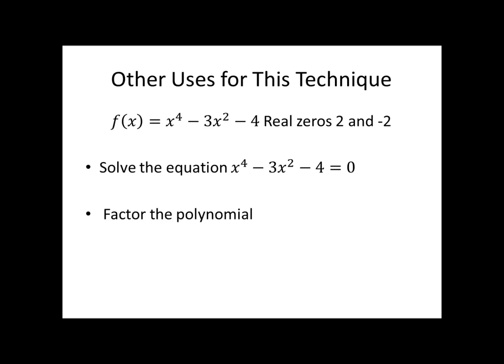Other uses for this technique: since we're finding where the function equals zero, we can solve the equation x⁴ - 3x² - 4 = 0 using the exact same process, finding real solutions x = 2 and x = -2. But here's the big thing — we can also use it to factor the polynomial. Two is a zero, so x - 2 is a factor; negative 2 is a zero, so x + 2 is a factor. We can rewrite the fully factored form as (x - 2)(x + 2)(x² + 1). This lets us factor polynomials we couldn't factor otherwise.